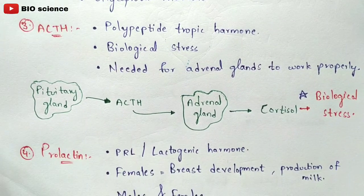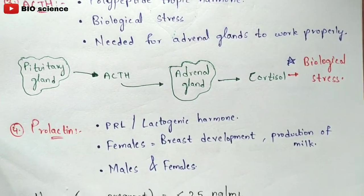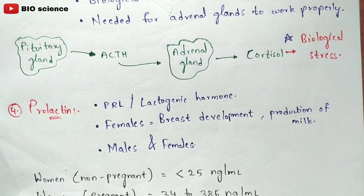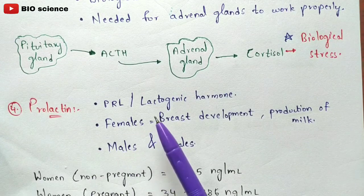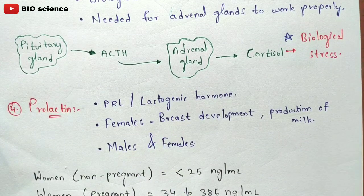The fourth hormone is prolactin, shortly called PRL, and it is also called lactogenic hormone.